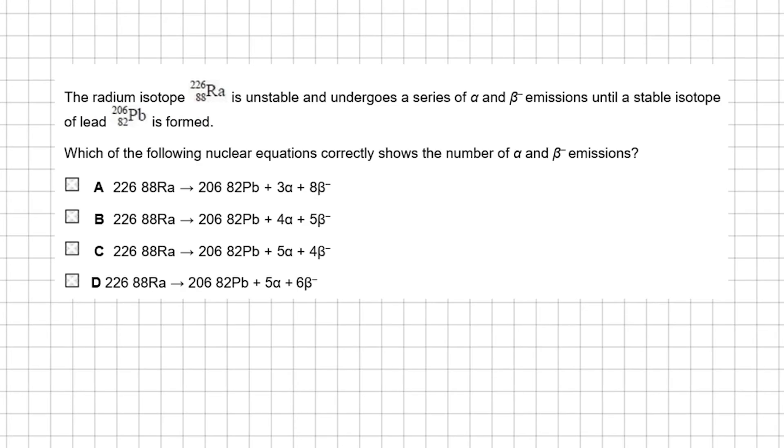Here's another exam-style question. This radium isotope is unstable and undergoes a series of alpha and beta emissions until a stable isotope of lead is formed. Which of the following nuclear equations correctly shows the number of alpha and beta emissions?